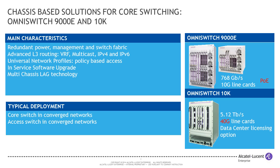The 10K, on the other hand, doesn't have PoE support. It's intended as a pure core switch with 40 Gbps line cards and over 5 terabits of capacity. All ports run at line rate. The 10K is really the core of the aggregation of the top-of-rack solution in the data center. By combining 6900s together in a mesh, the 10K can provide very low latency between ports in your data center.